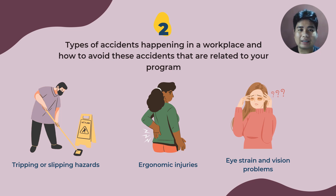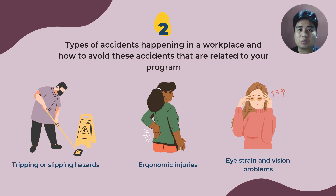One of the most common accidents in the workplace is a tripping or slipping hazard. This can occur due to wet or slippery floors, uneven surfaces, cluttered walkways, and obstructed pathways. Tripping or slipping hazards can result in falls, which can cause injuries such as bone fractures or head trauma. Aside from that, most computer engineers work in the office and sometimes we are not aware of our posture when sitting, so we may experience ergonomic injuries due to poor posture, awkward body positions, and repetitive motion. Ergonomic injuries can lead to musculoskeletal disorders such as back pain, neck pain, and carpal tunnel syndrome.